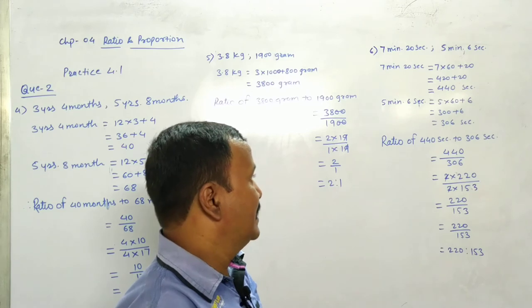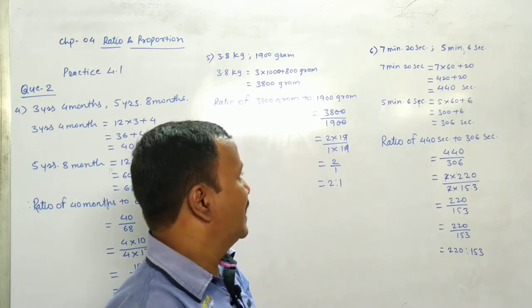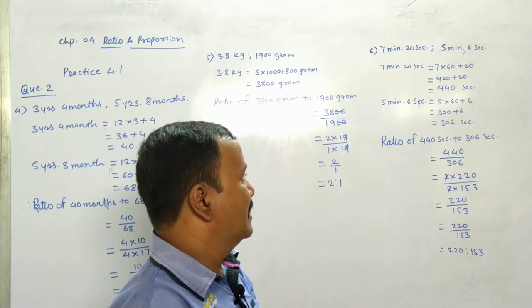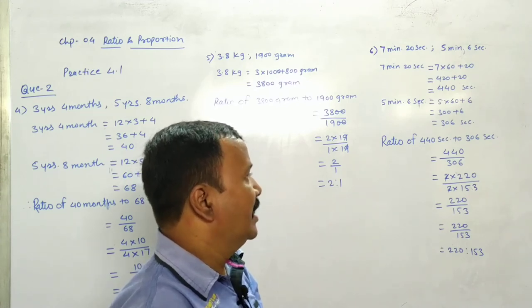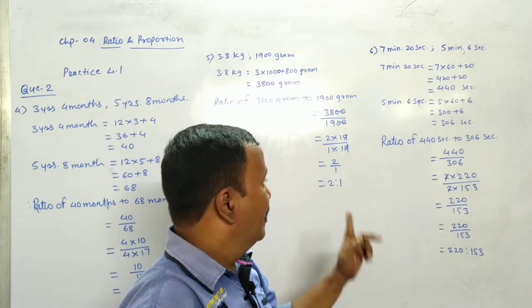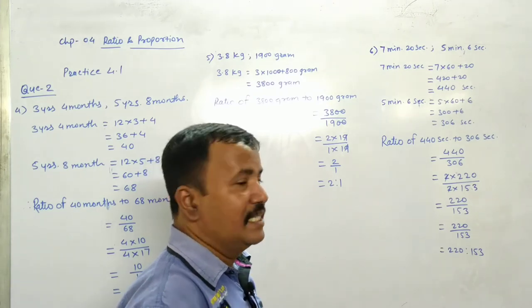440 seconds. 5 minutes plus 6 seconds is equal to 5 into 60 plus 6. That is 300 plus 6, 306 seconds.